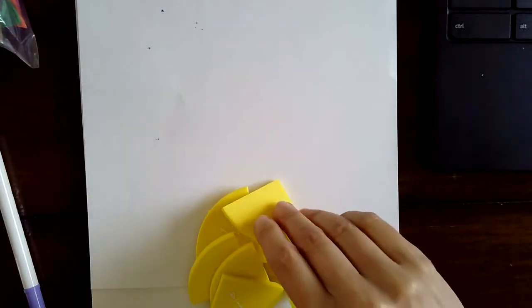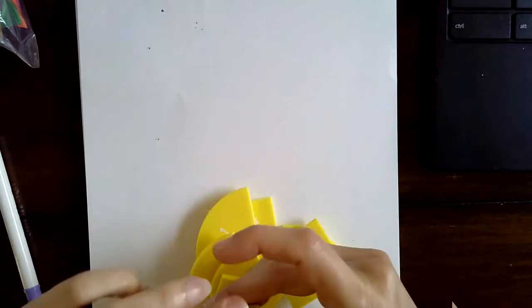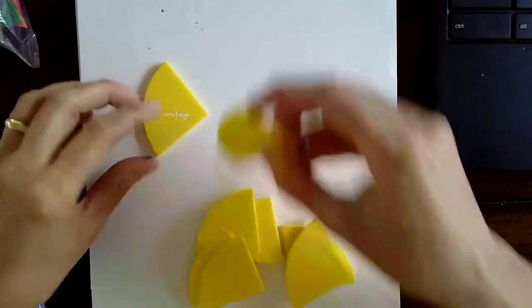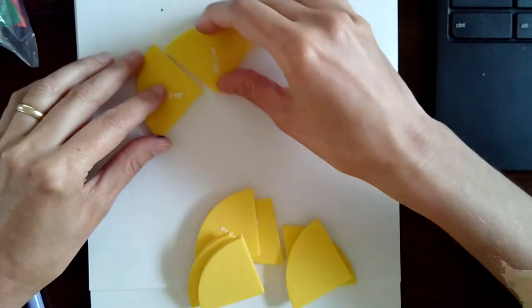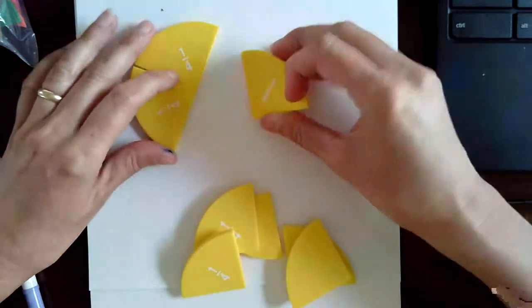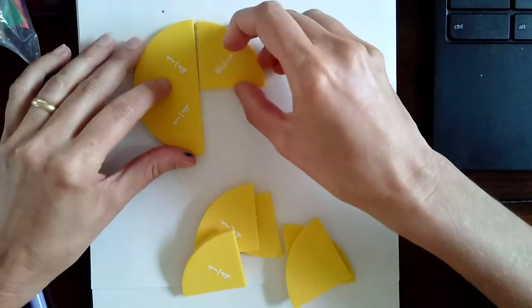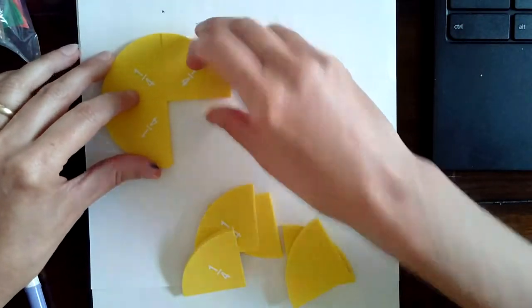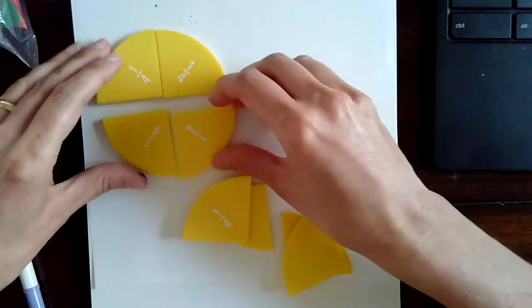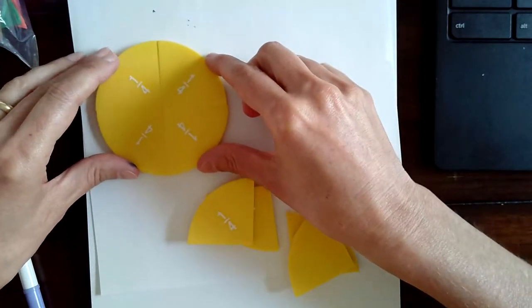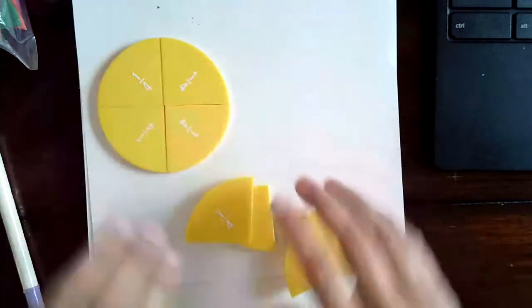Okay, now we're going to use our circle fractions for a couple of minutes. We're looking at fourths. So if we put these together, two-fourths is a half, then three-fourths, four-fourths. Four-fourths is one whole.